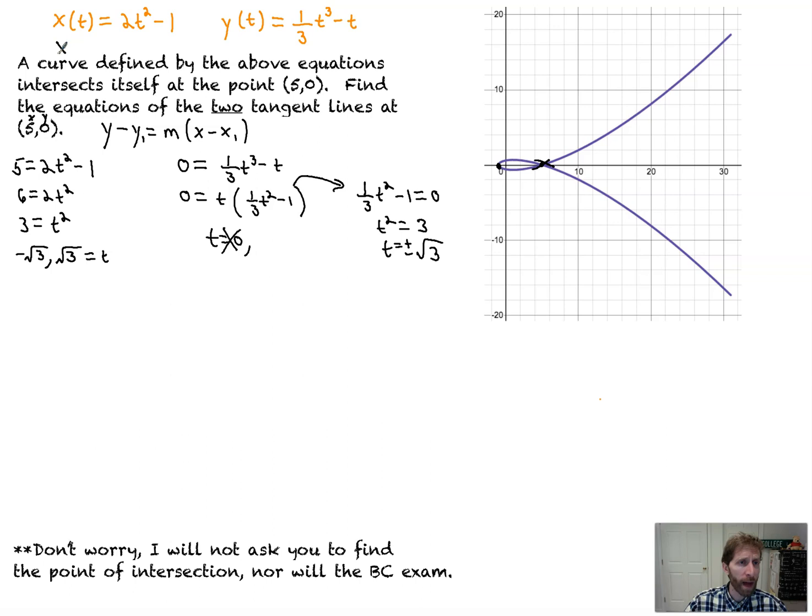So as we've been finding in the past, we're going to find x prime of t, which we know is 4t. We found that in many previous videos. If you haven't seen any of the previous videos, well then, this is the first time you've found the derivatives of these. The derivative of this is t² minus 1.